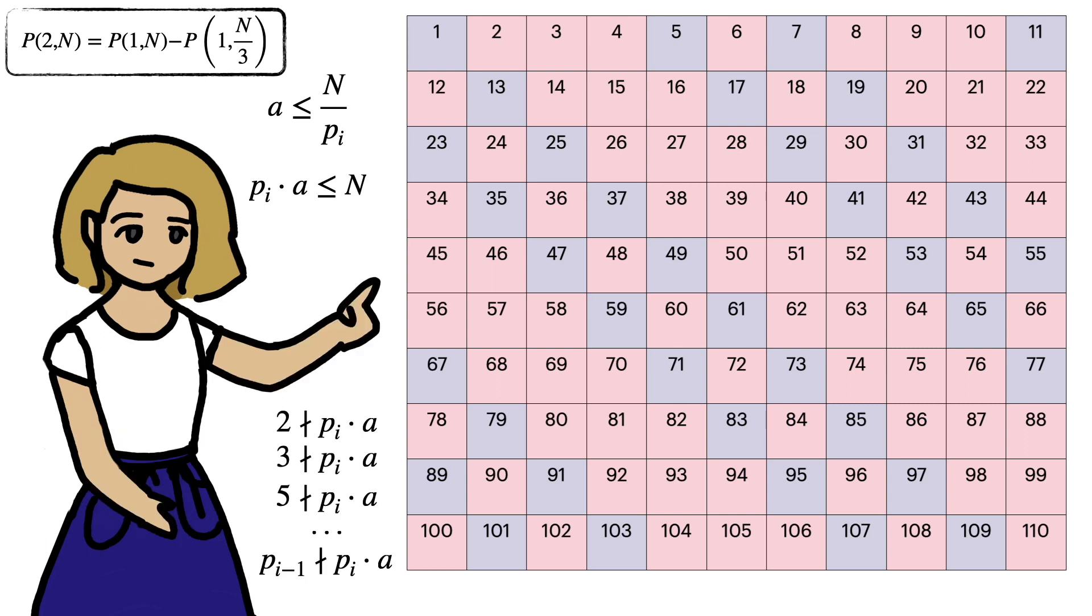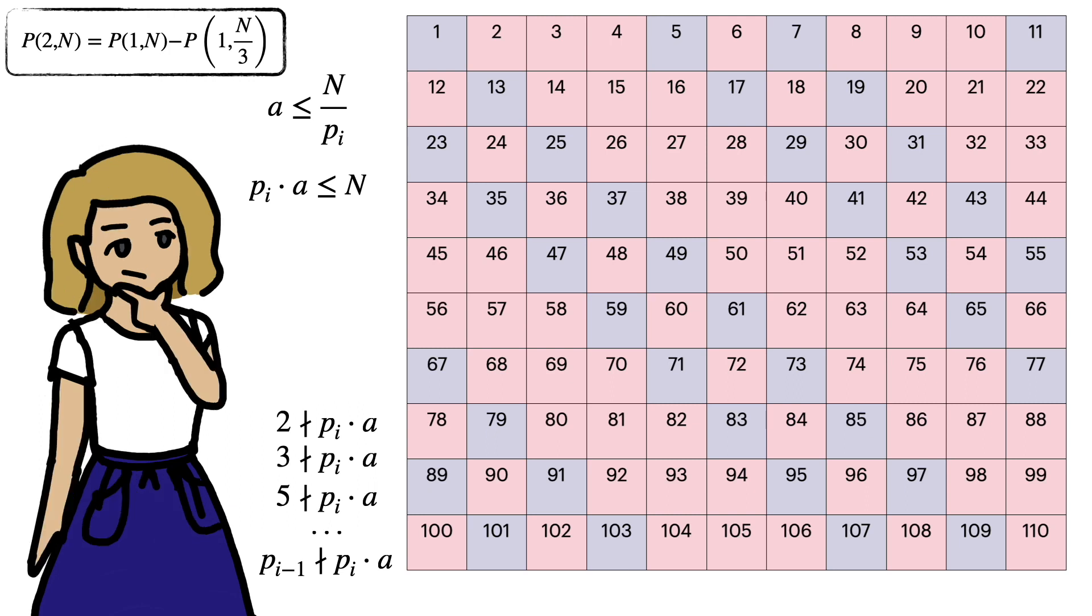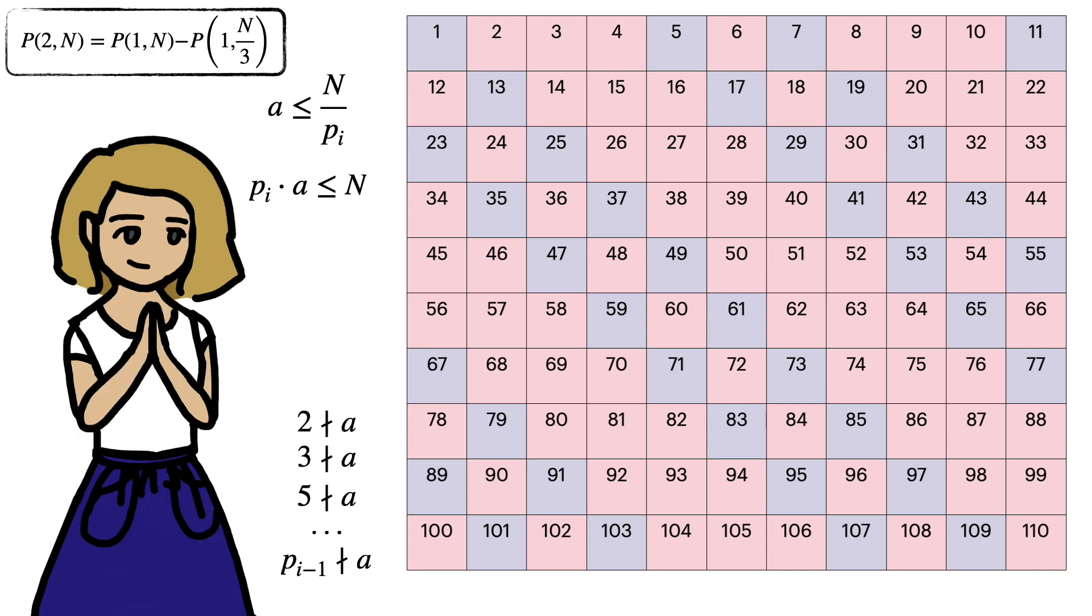Then, for all primes up to p_(i-1), p_i times a can't be divisible by any of these primes. p_i is a prime number, so it's not divisible by any of these primes. So it remains that a isn't divisible by any of them. And this is true if and only if a is on a blue square.